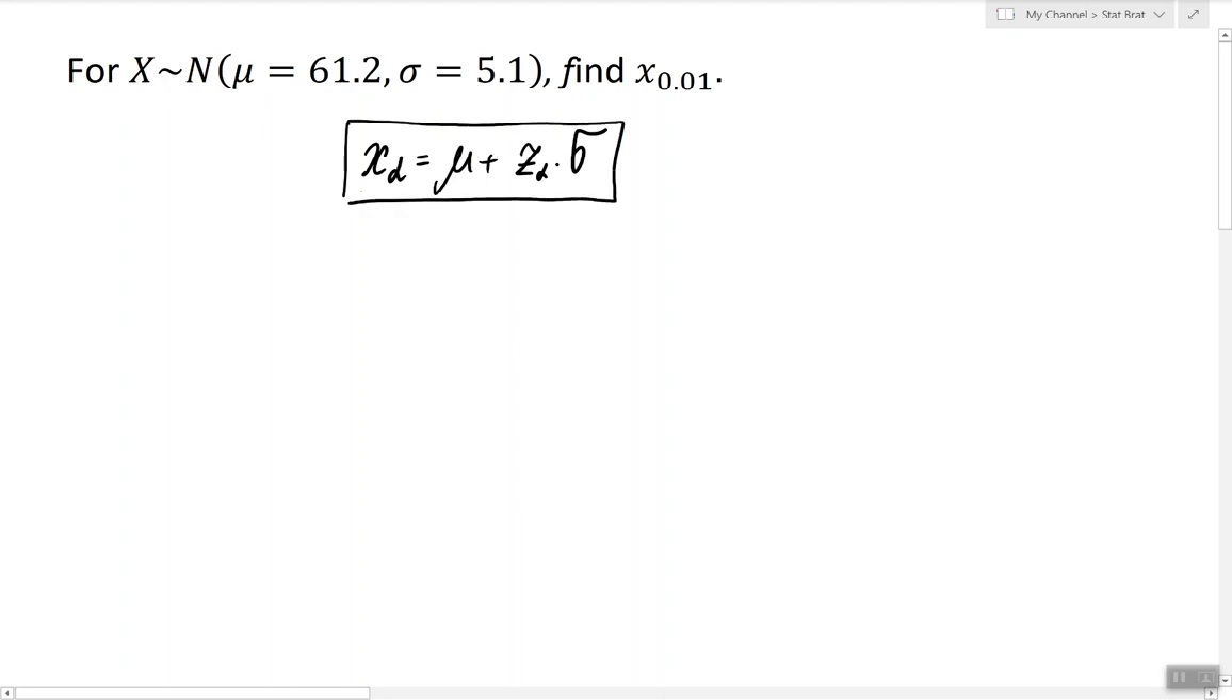In our case alpha is equal to 0.01, so x 0.01 will be equal to mu plus z 0.01 times sigma.